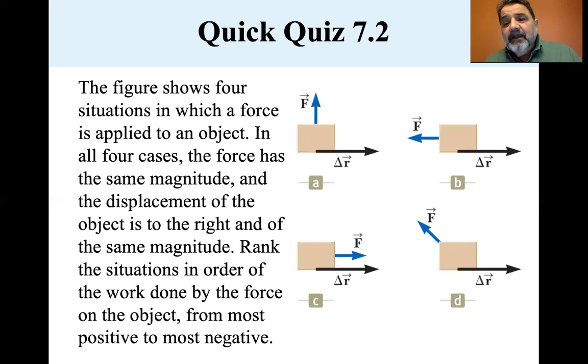And then B, since it's 180 degrees, the cosine of 180 degrees is full negative. It's minus one, so it ends up being greater than D. So the ranking is C, A, D, B. That is the ranking for this. Let's see if I'm right.